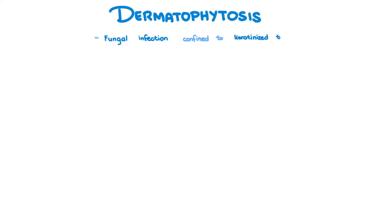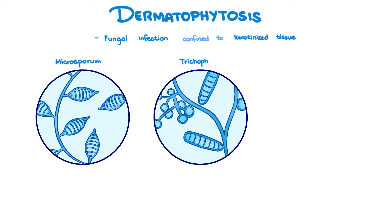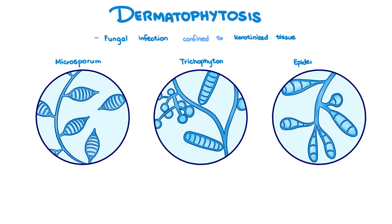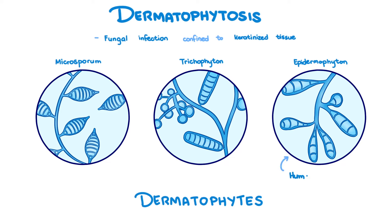Dermatophytosis is a fungal infection confined to keratinized tissue. It can be caused by three genera of fungi: Microsporum, Trichophyton, and Epidermophyton. They are collectively called dermatophytes. Epidermophyton is primarily seen in humans, while Microsporum and Trichophyton can infect both humans and animals.